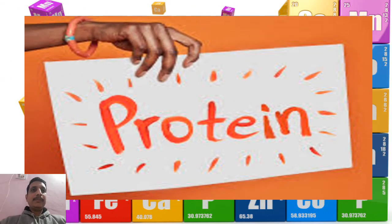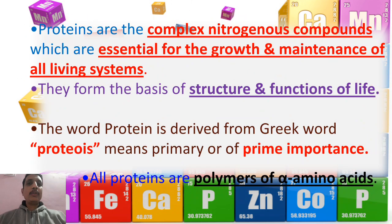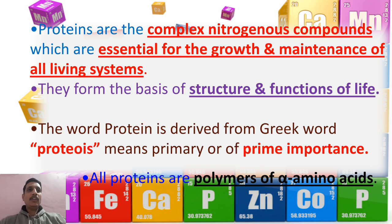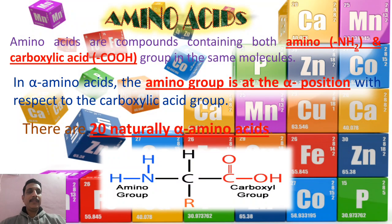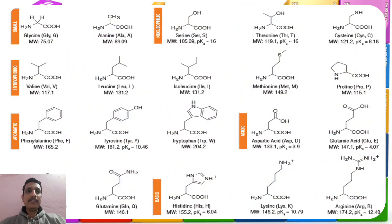In the previous class we discussed what are proteins. Proteins are a nitrogenous organic compound, a complex organic compound required for the growth of the body and normal maintenance of all living systems. It is the basis of structure and function of the body, and proteins are polymers of alpha amino acids. Later we studied the chief sources of proteins, then amino acids and their structure — the structures of 20 naturally occurring alpha amino acids.